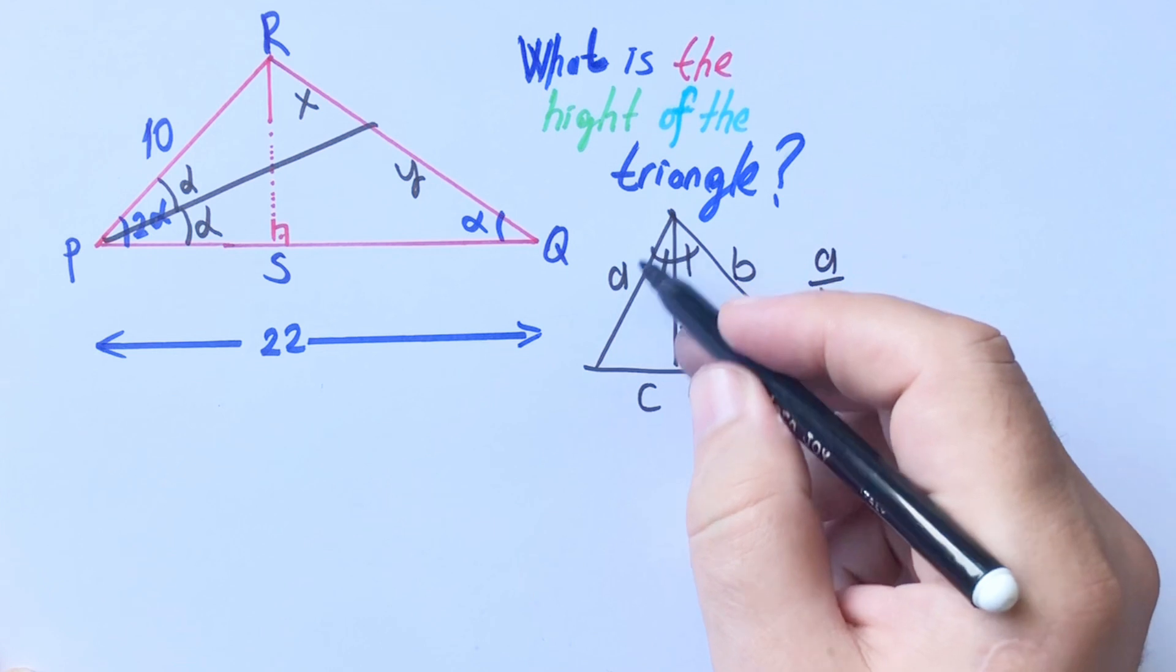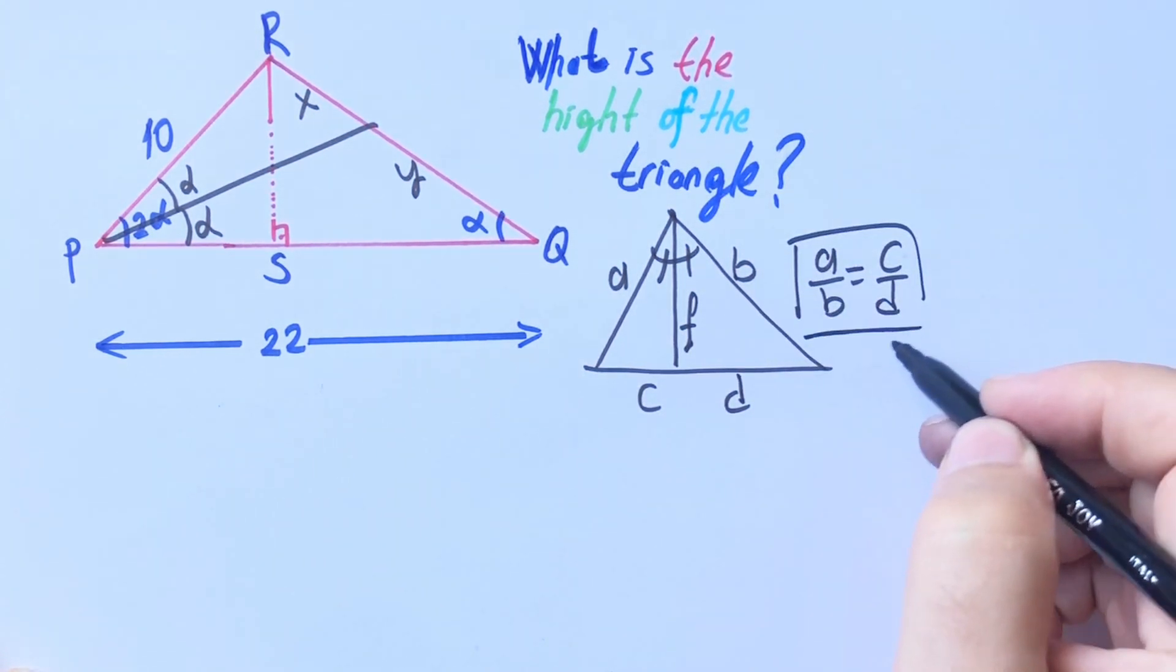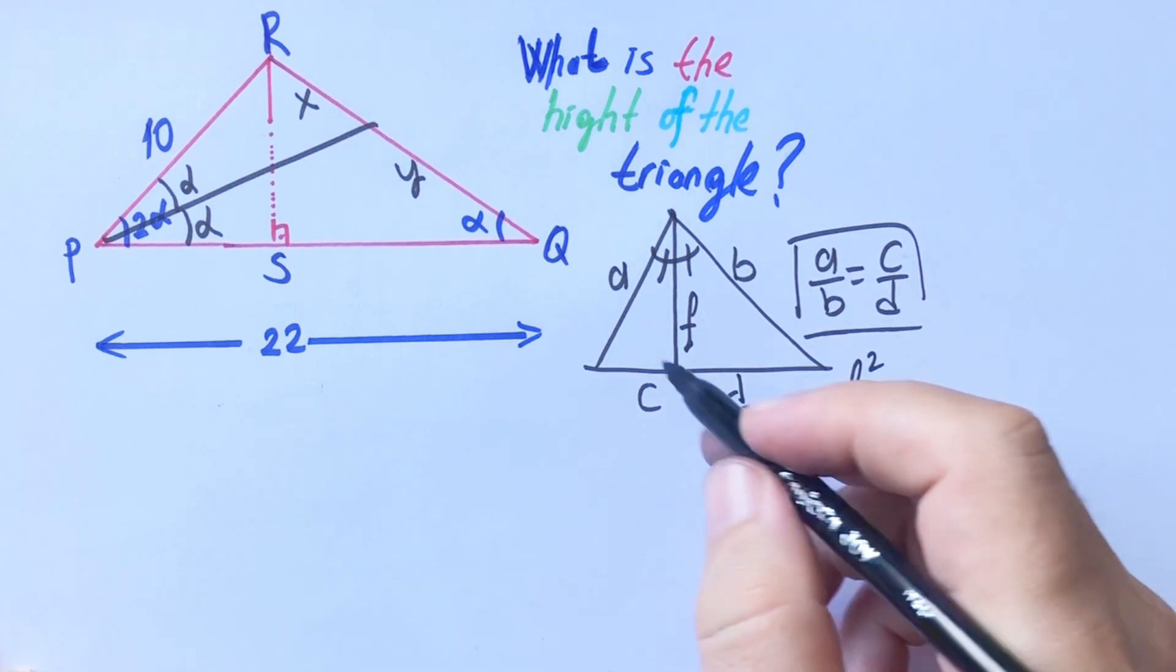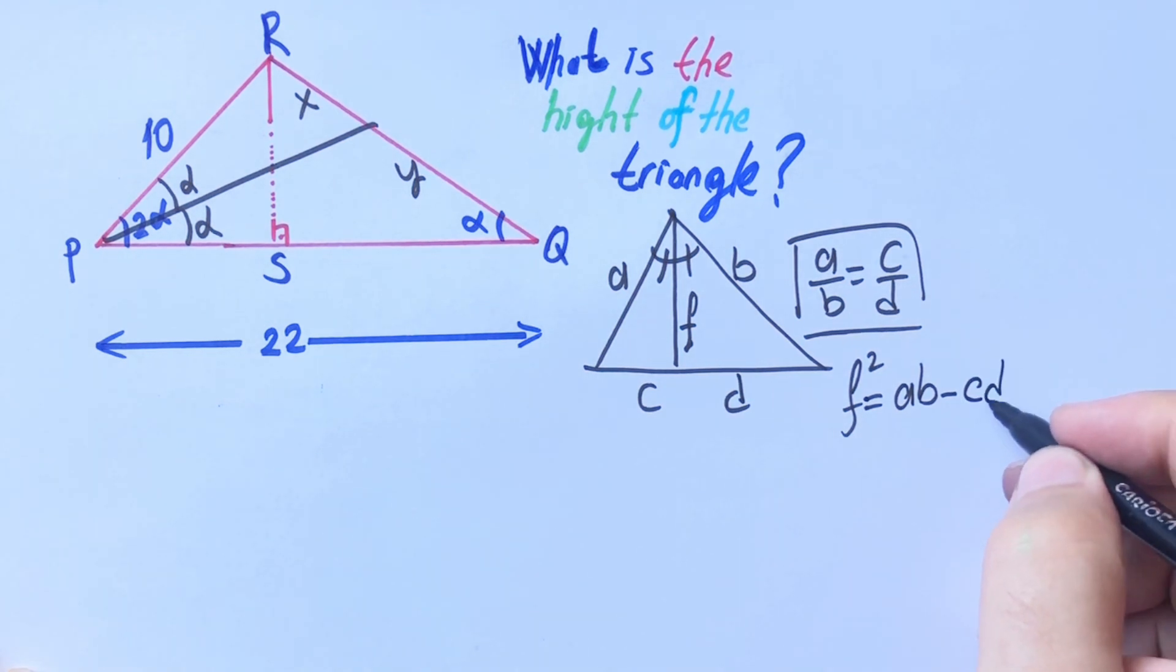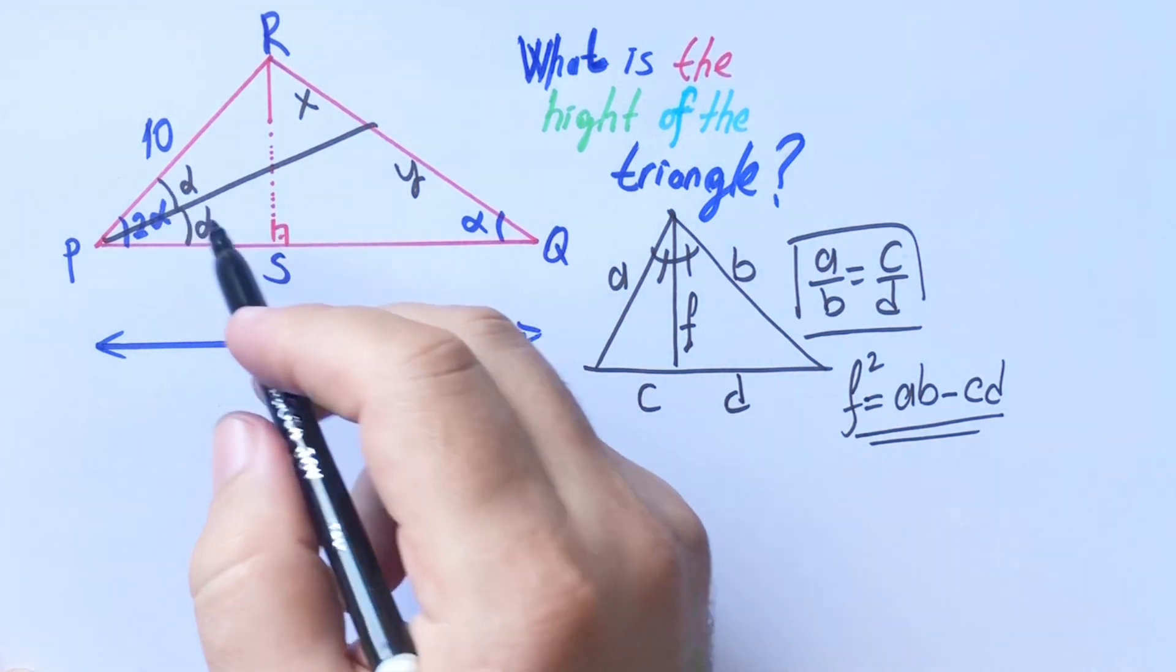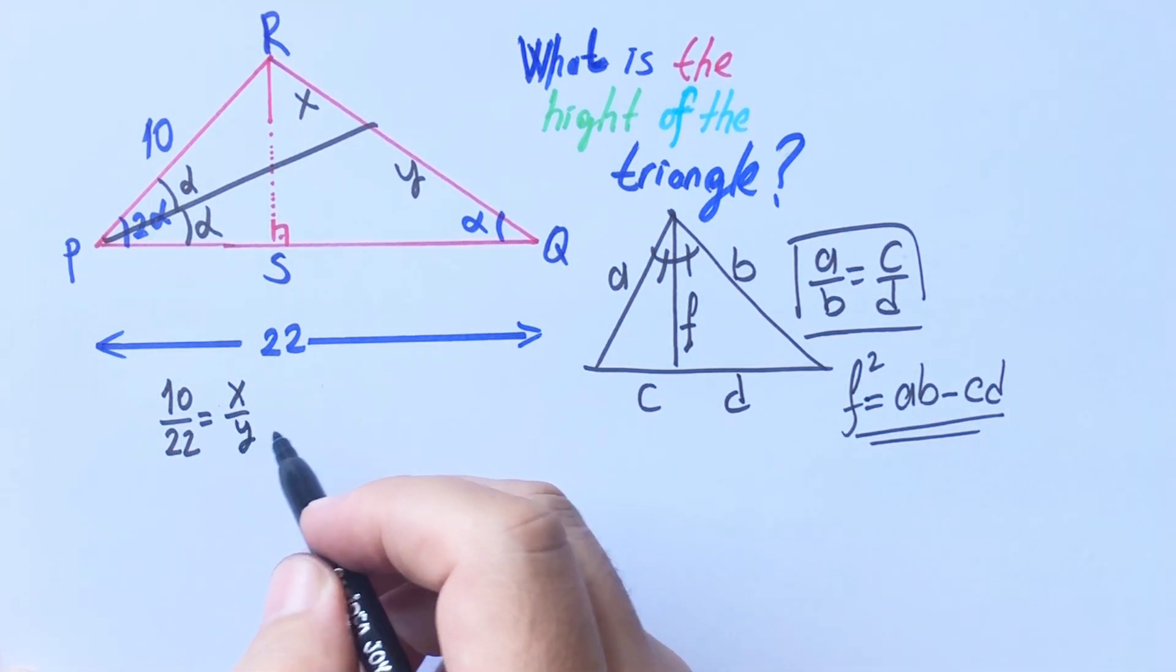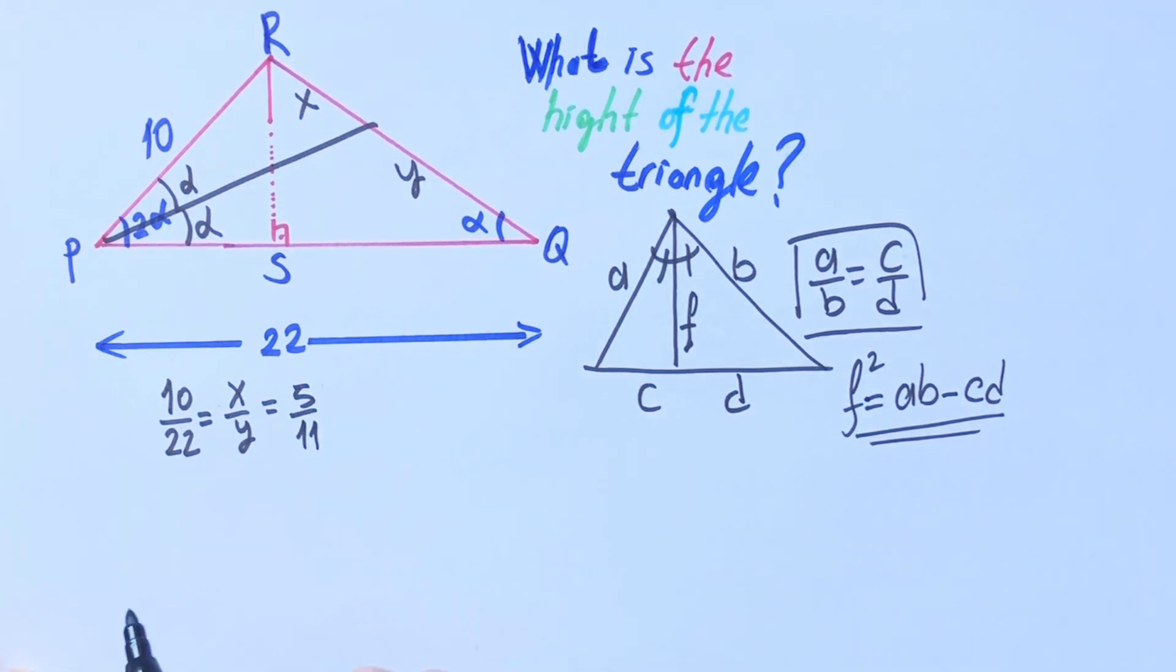Ratio of a over b is equal c over d, and f squared equal a times b minus c times d. These two formulas are very important. If we plug into the formula, 10 over 22 is equal x over y. If we simplify, 5 over 11 right.